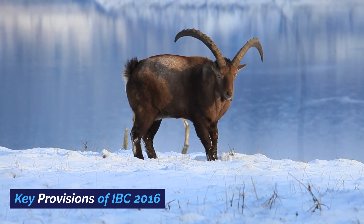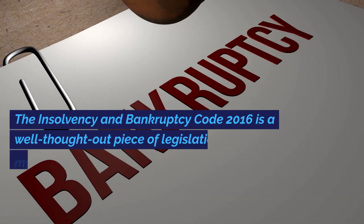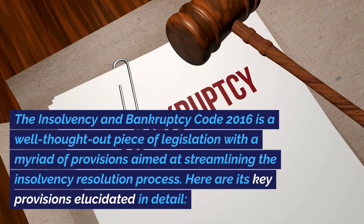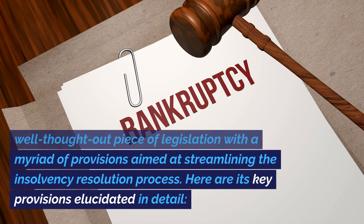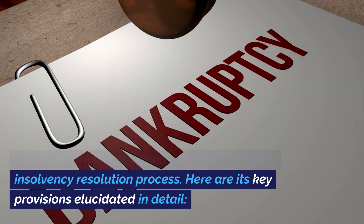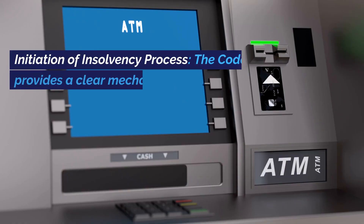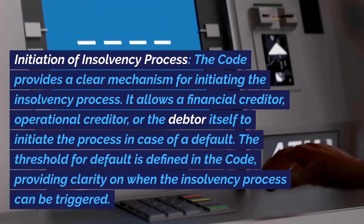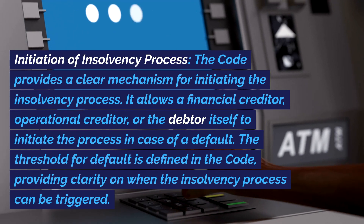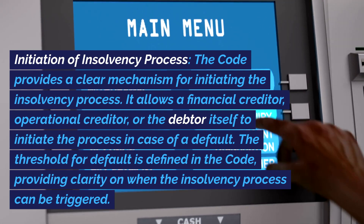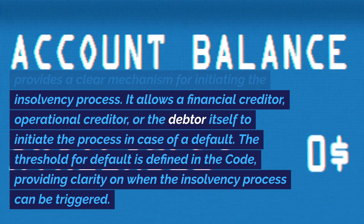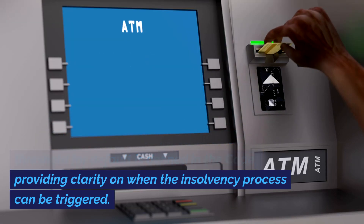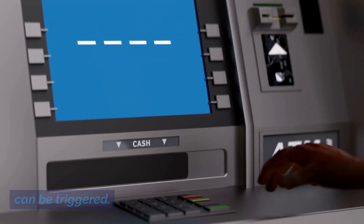The Insolvency and Bankruptcy Code 2016 is a well-thought-out piece of legislation with a myriad of provisions aimed at streamlining the insolvency resolution process. The Code provides a clear mechanism for initiating the insolvency process, allowing a financial creditor, operational creditor, or the debtor itself to initiate the process in case of a default. The threshold for default is defined in the Code, providing clarity on when the insolvency process can be triggered.